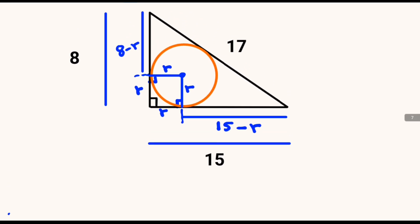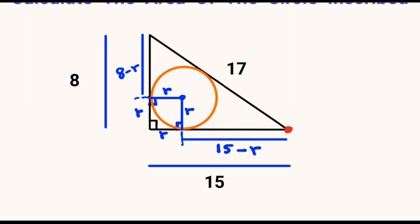In the same token, we have a common point and two tangents coming from that external point. The first one is 15 minus r, so we expect that this length from that same common point to that tangent will also be equal to 15 minus r.